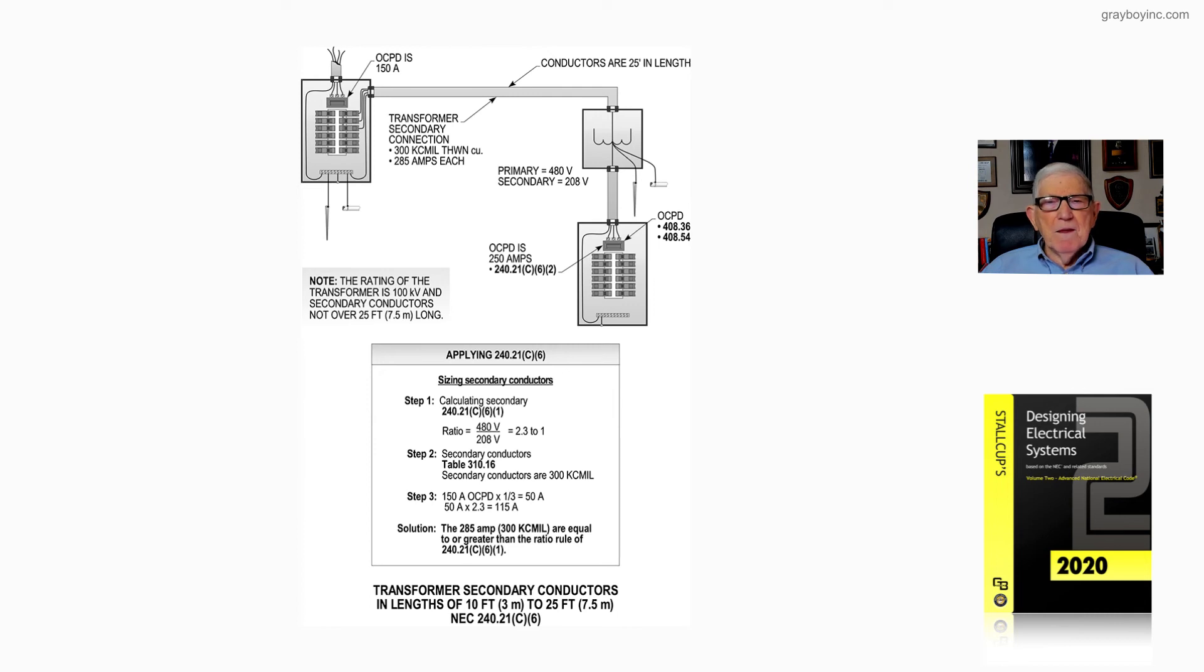So this illustration 20-39 is illustrating the procedure when you're applying 240.21C6 for a commercial tap and not 240.21C3 for an industrial tap. So you folks installing these separately derived systems, you want to know the difference in the 240.21C3 industrial tap and how that would be applied in a calculation.